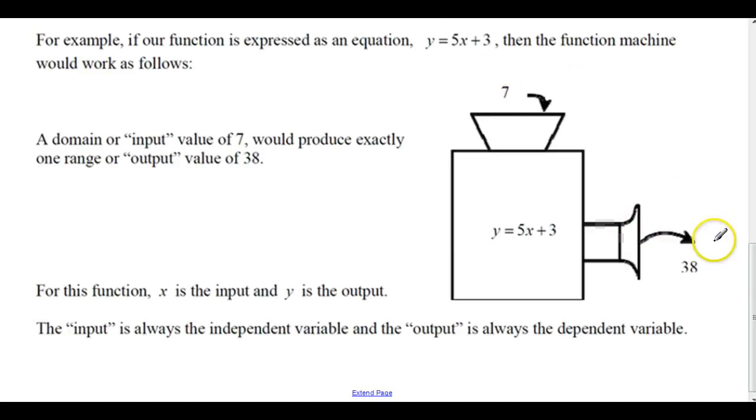If you drop 7 in, it doesn't produce 38 one time, and 17 the next time, and 12 the next time, and that makes this a function. So a domain or input value produces only, or exactly, one range or output value. For this function, the input is x and the output is y. The input is always the independent variable, and the output is always the dependent variable.